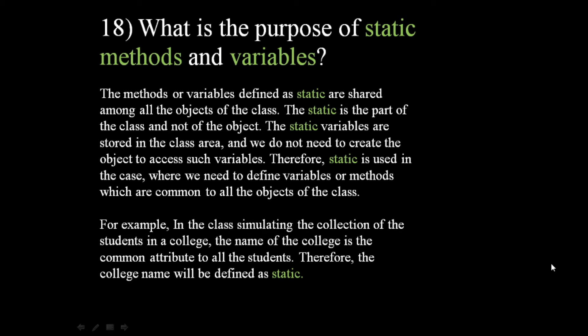Static is the part of the class and not of the object. Whenever we define a method or variable as static, it is shared among all the objects of the class, so all objects can use that particular static method or variable. To access a static method or variable, we do not need to create a new object. Static is used when we need to define variables or methods that are common to all objects of the class.